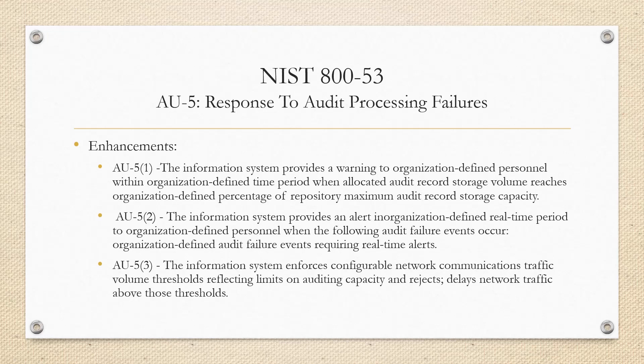AU5 Enhancement 2: the information system provides an alert to organizationally defined personnel or roles when an audit failure event has occurred. There are a lot of organizationally defined variables within these enhancements — it's going to be those defined roles and a given time period. If an audit failure happens, what is the organizationally defined time period that should align with best practices? Do you have screenshot evidence to prove it? So if your procedures call out that you notify people within four hours of an audit failure, then any notification and corresponding evidence should be within that given threshold.